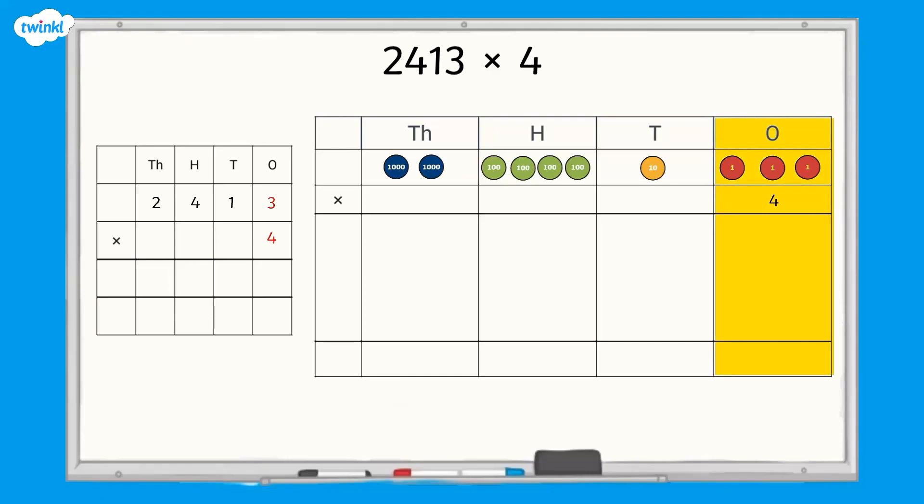Three ones multiplied by four equals twelve ones. We know when we have ten or more in one column we need to regroup. So let's regroup ten of these ones counters into one tens counter. This leaves us with two ones in the ones column.